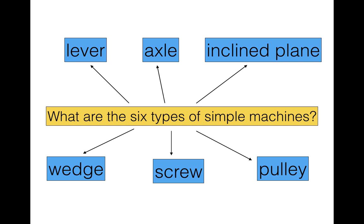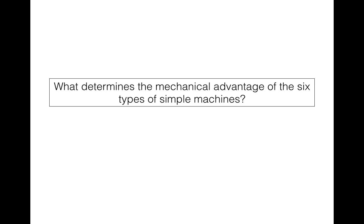We have a lever, a wheel and axle, inclined plane, wedge, screw, and a pulley. On top of that we're also going to be looking at what determines the mechanical advantage of each of these types of simple machines.